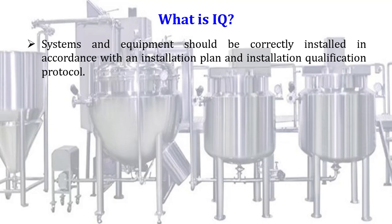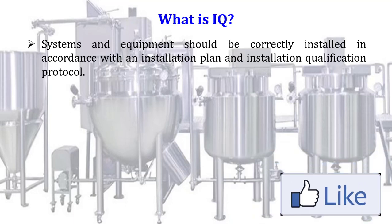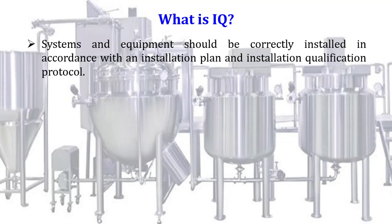Whatever system we procure — any machine or equipment — to manufacture a drug product, it should be installed according to the installation qualification protocols and documents. All the drawings, verifications, and documented evidence need to be verified, which we will discuss further in this video.